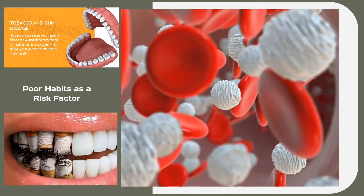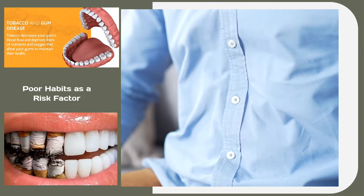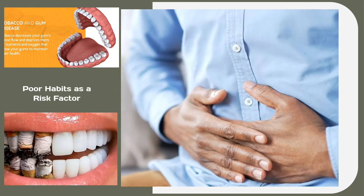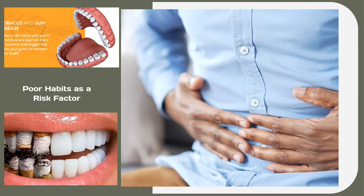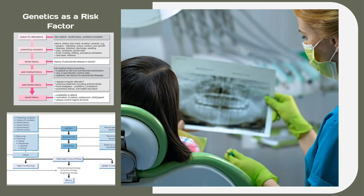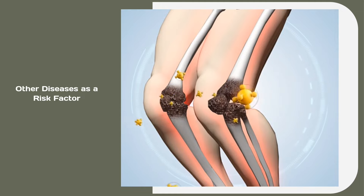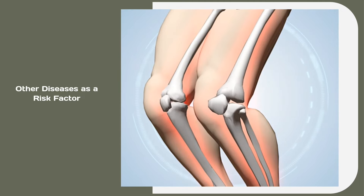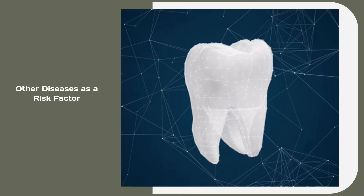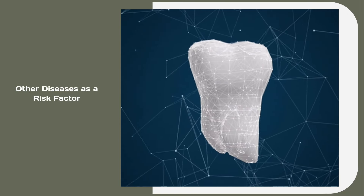Bad habits like smoking damage the gums' ability to regenerate. Incorrect hygiene habits, such as not brushing or not using dental floss daily, can also facilitate gum inflammation. A family history of periodontal diseases may contribute to gingivitis on a genetic basis. Lastly, certain diseases like cancer, AIDS, and diabetes, which affect the body's immune system or ability to absorb sugars, can make individuals more susceptible to dental inflammation, including gingivitis.